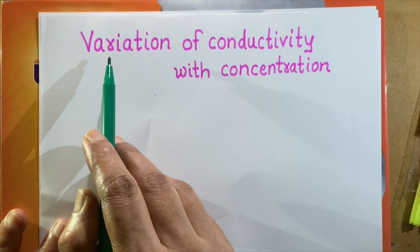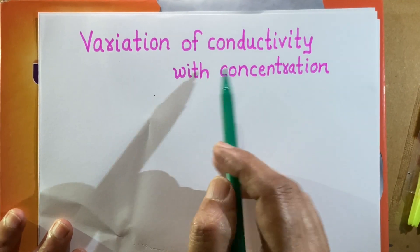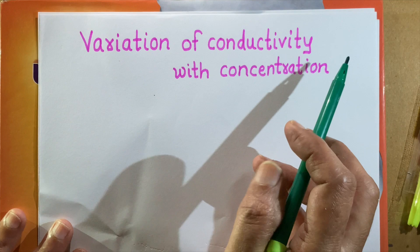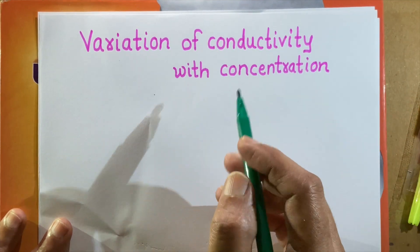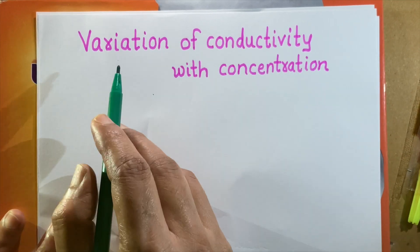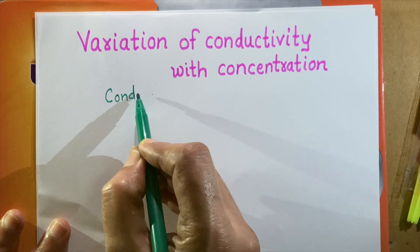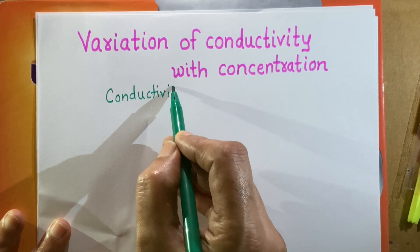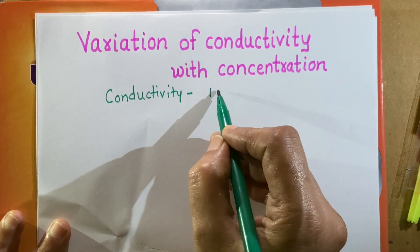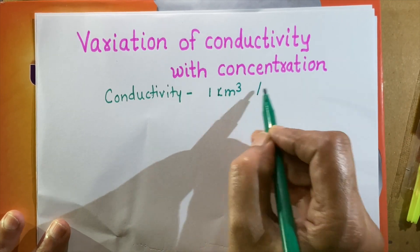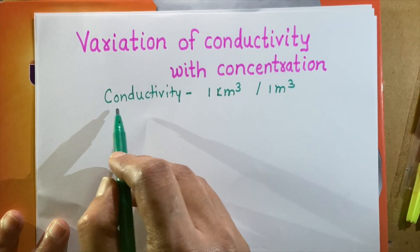We shall see what is the relation between conductivity and concentration, or how conductivity of the solution changes with change in concentration of the solution. Conductivity is the conductance due to the unit volume of the solution — meaning, if the volume of the solution is 1 cm³ or 1 m³, then the conductance of this solution is called conductivity.